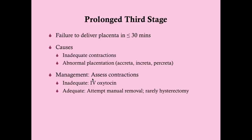Remember the signs of placental delivery: there's a gush of blood that has been accumulating between the placenta and the uterine wall, which rushes out as the edge of the placenta separates. This is often accompanied by elongation of the umbilical cord. Apply gentle traction on the cord with your clamp and it should gradually come out — well within 30 minutes under normal circumstances.